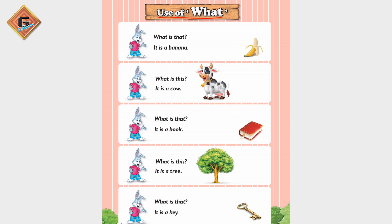An answer will be given — that means information is being asked and we have to provide it. Like the first one: 'What is that?' — 'What is that?' — a banana. So the answer will be 'It is a banana.' The question was asked and we gave the answer: 'It is a banana.' The next one is 'What is this?'